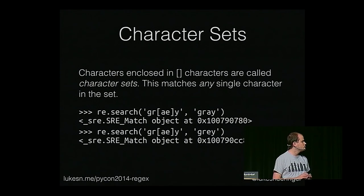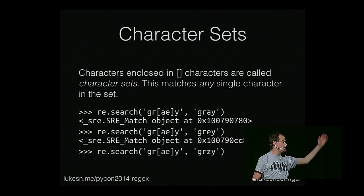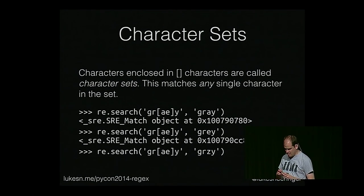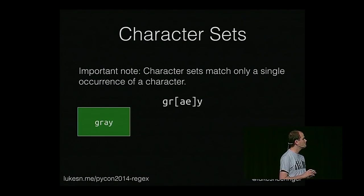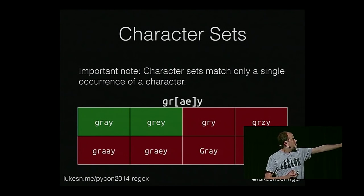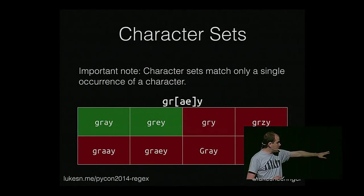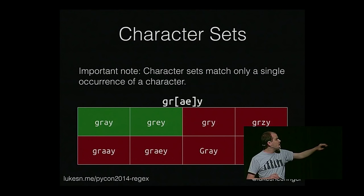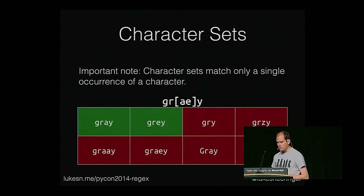The character set [ae] matches gray with an a and gray with an e. A character set matches one single occurrence of a character — it doesn't match absence, it doesn't match a different character, it doesn't match the character repeated, it doesn't match both characters, and it doesn't match something with different case.